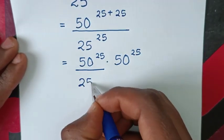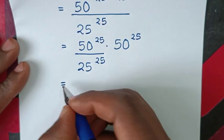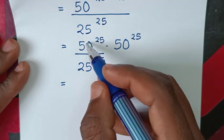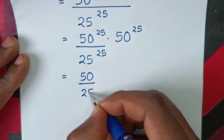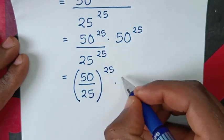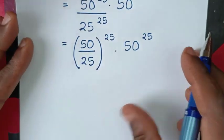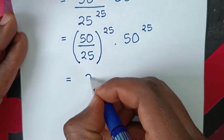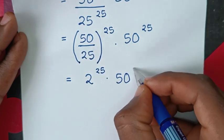We then divide one part of the numerator by 25^25. Since we have the same power of 25, we apply the division of exponents with different bases but the same power: 50 over 25 gives us 2, so we get 2^25 times 50^25.